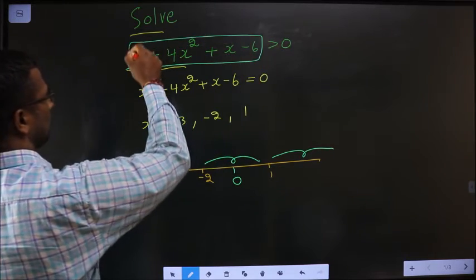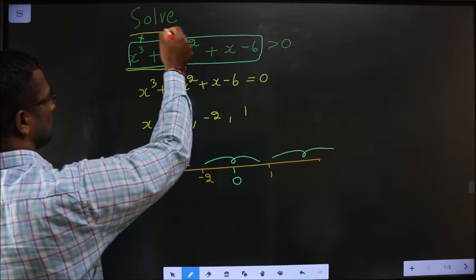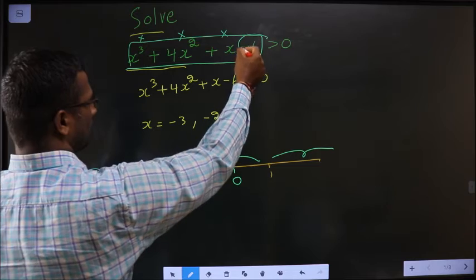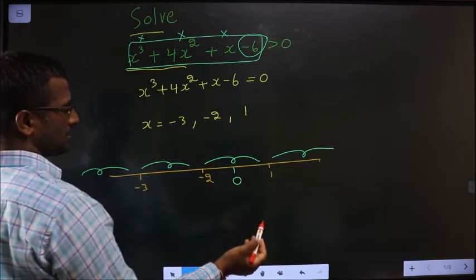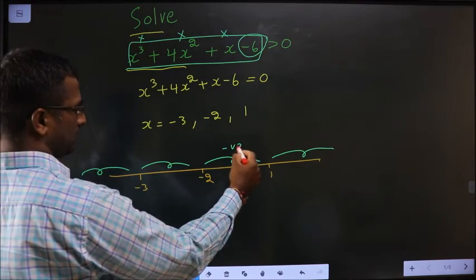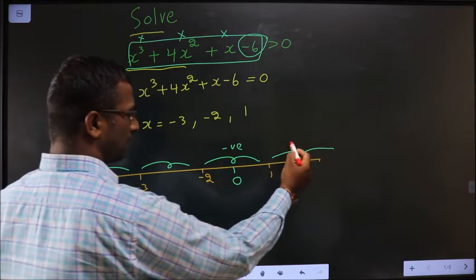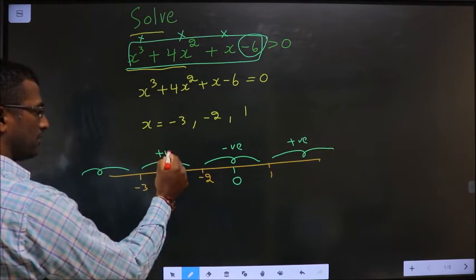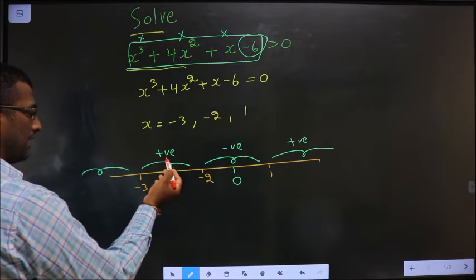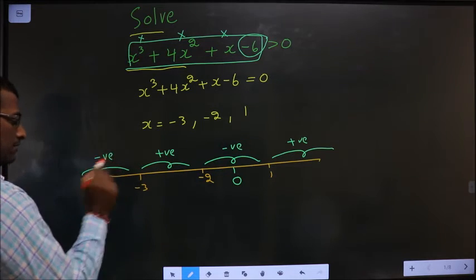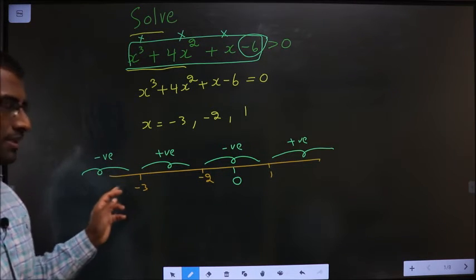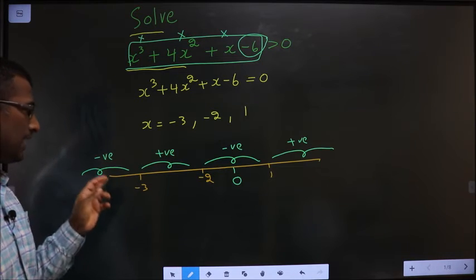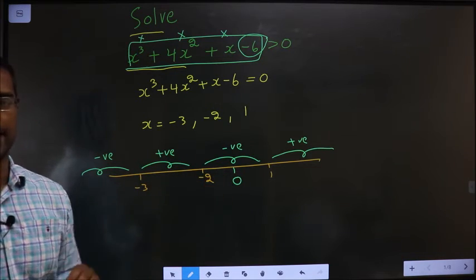If x equals 0, the x terms vanish and you are left with minus 6, which is negative. If here it is negative, the next region will be positive, and the region before will be positive too — signs alternate: negative, positive, negative, positive.